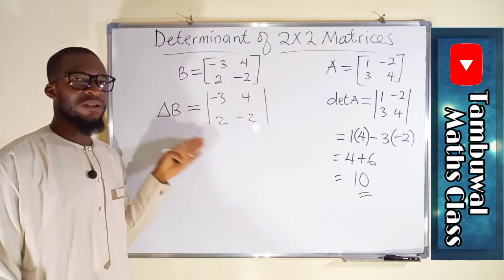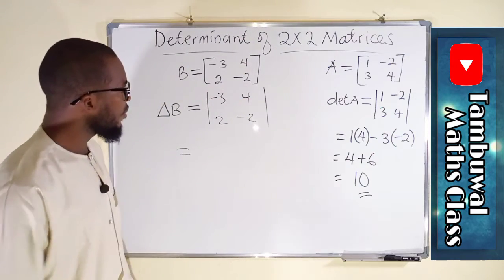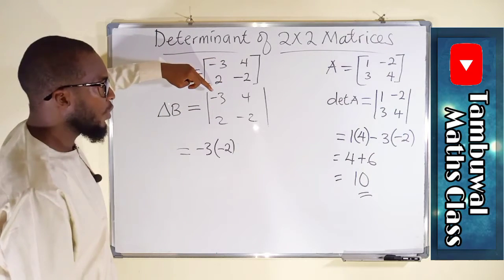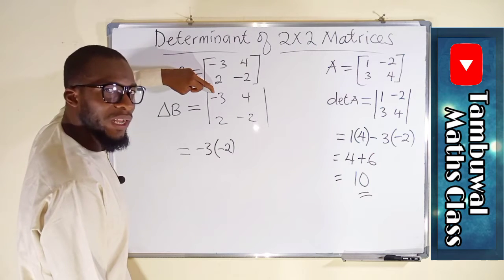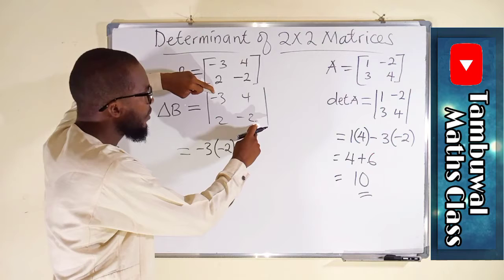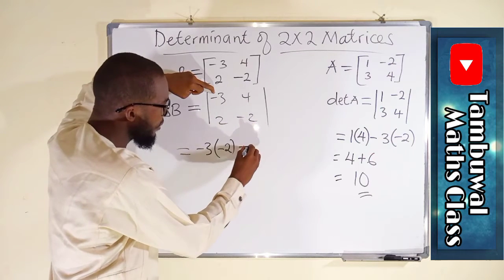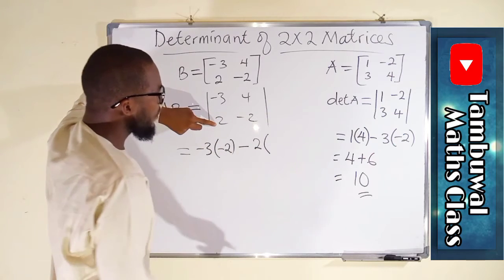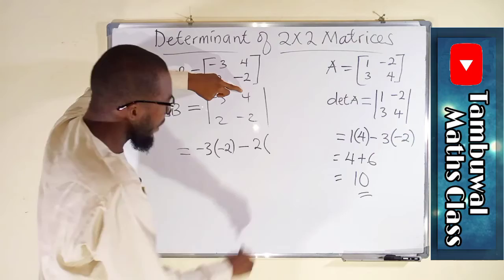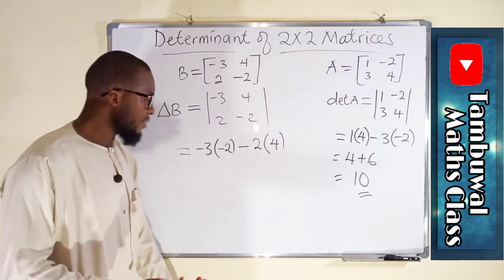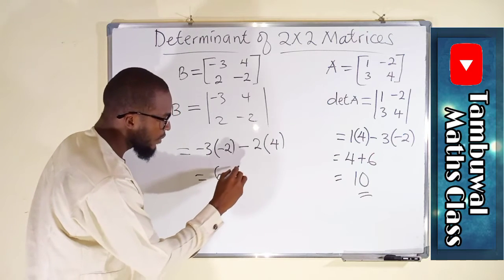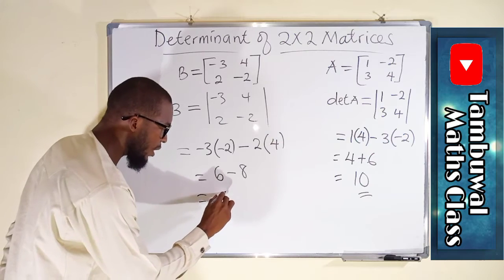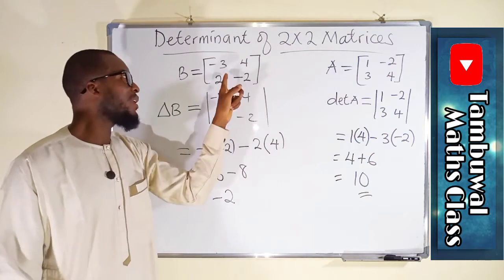Now you take the product of the diagonal elements. You take the differences. And this is equal to minus 3 multiplied by minus 2. Always, I repeat, always start with the first row, first column element at the top left. Multiply it with the second row, second element together. Then you take the difference. Then you come here, second row, first column element, which is 2. You multiply it with first row, second column element, which is 4. You simplify and obtain your answer. This multiply by this will give us 6 minus 2 times 4 is 8. Now, if you subtract 8 from 6, you shall get a negative number 2. So, this negative 2 is the determinant of this matrix B.